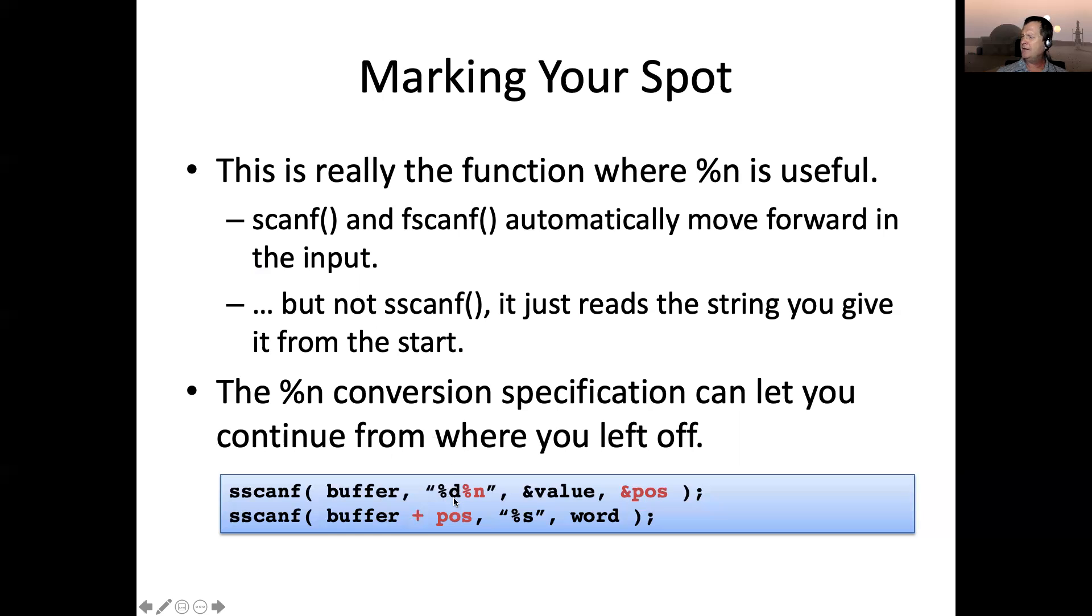So let's say you had a three-digit integer here, and then you put %n, the integer would go in this value field. And then the number three, how many characters you had to read to read up to that point, that'll go in whatever integer parameter you pass out here, or you pass in the next argument.